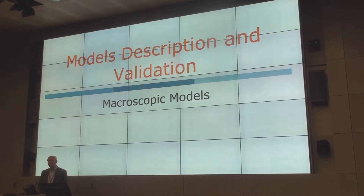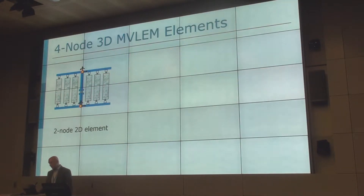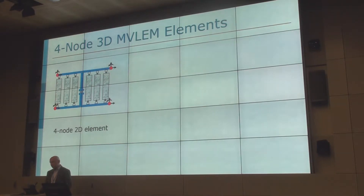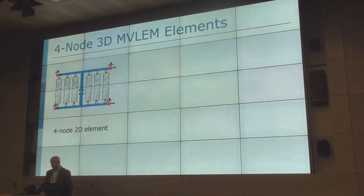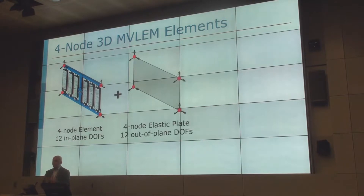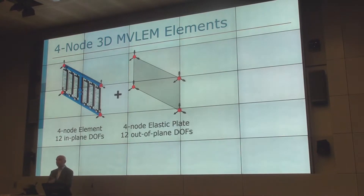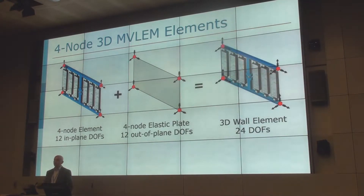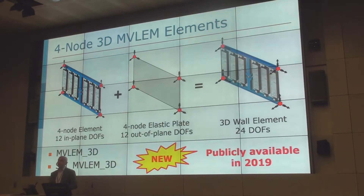So we extended these models to overcome these difficulties. First, I'll talk about macroscopic models that we extended. Conceptually, it's very simple — we started with a two-node element, we converted it to a four-node element using different interpolation inside the element, but the element formulation is essentially the same. And then we made it three-dimensional, sticking to linear elastic out-of-plane behavior. That gives us a 24-degree-of-freedom three-dimensional element. We did this for the MVLEM (the uncoupled version) and for the shear-flexure version — and that's something new.